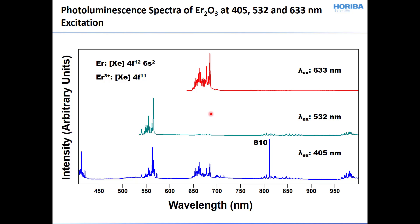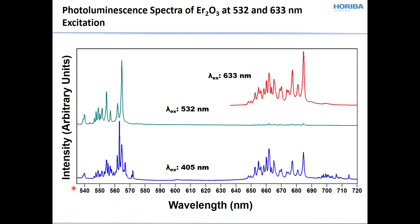The reason these transitions are so very well resolved with all this fine structure is because they're essentially like atomic spectra. The f orbitals are not part of the chemical bonding, so there's no coupling to the oxygen, and these transitions are shielded from the bonds to surrounding atoms — hence the fine structure shows up so well when using a Raman spectrometer. Using different excitation wavelengths, you can couple into different transitions. For example, in the region from about 535 to 720 nm, at 633 and 405 nm excitation, clusters of emissions appear that are very weak with 532 nm.